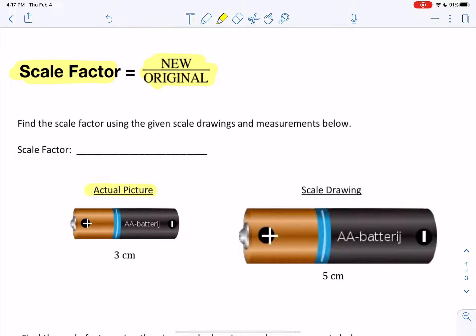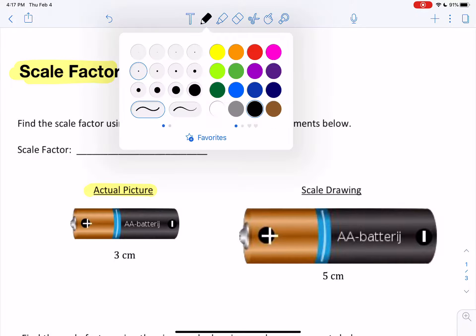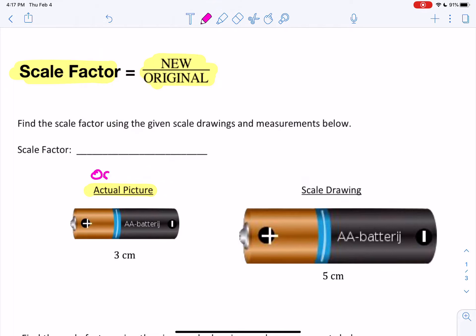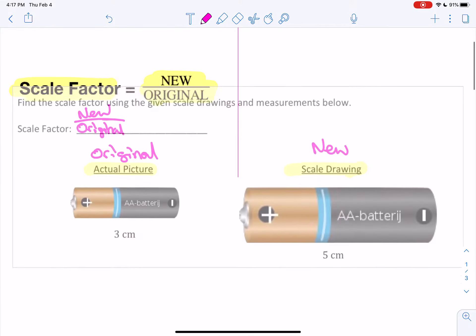So the actual picture is going to be our original. The scale drawing is going to be the new, right? You have to have the picture before you can do a scale drawing of it. And the scale factor equals new over original. And remember, I highly suggest that you keep writing the formulas to help you remember.